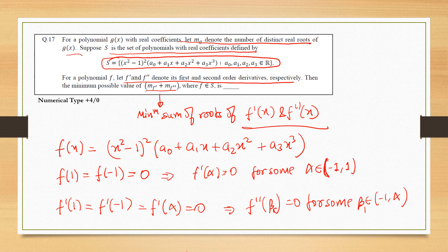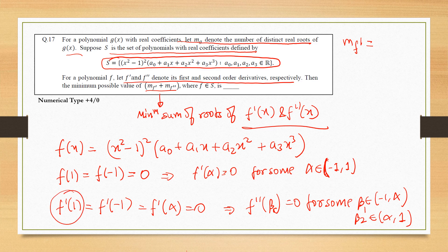So what did we find? m(f') - the number of roots of f' - we have 1, -1, and α, so 3. m(f'') - we have β₁ between -1 and α, and β₂ between α and 1, so 2.